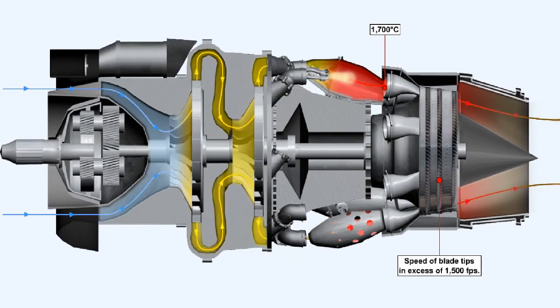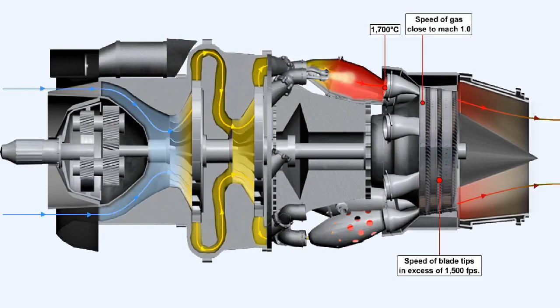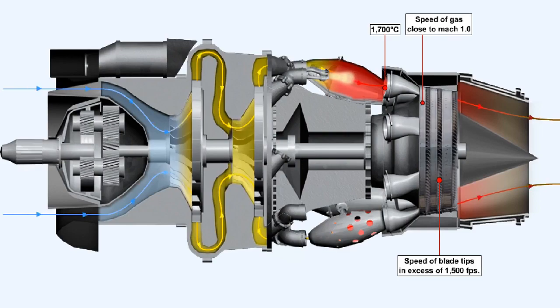At the same time, the temperature of the gases driving the turbine can, in a modern engine, reach as high as 1,700 degrees Celsius. The speed of these gases is as high as 2,500 feet per second, that is close to the speed of sound at these temperatures.